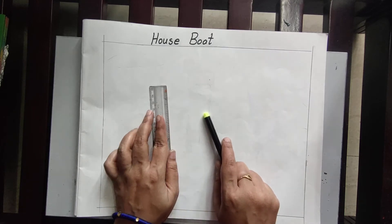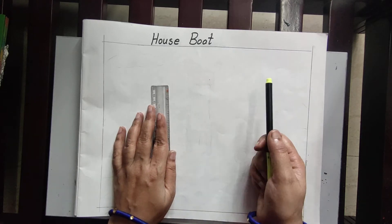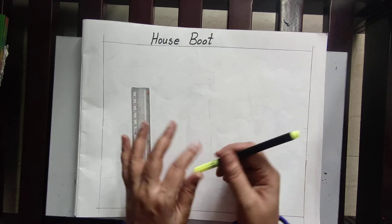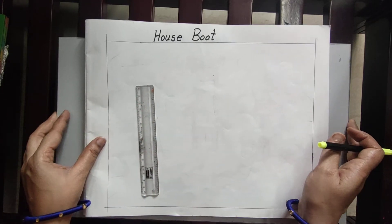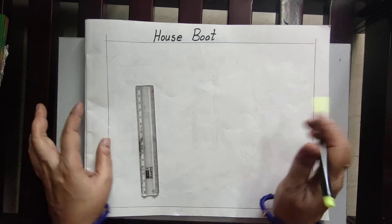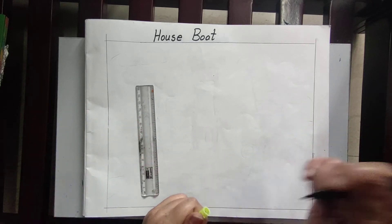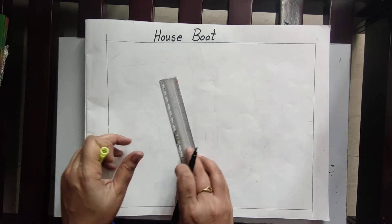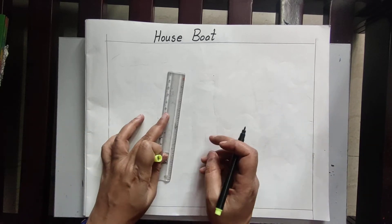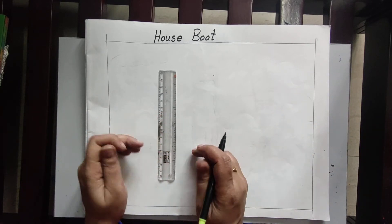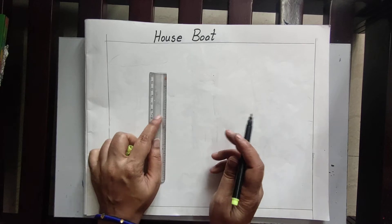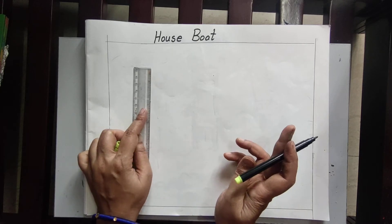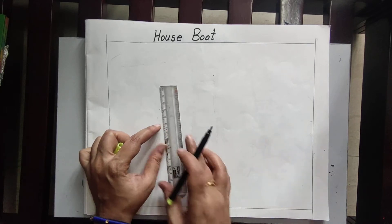Some boats are designed like a house. Where you can see a boat? On the water, on the river you can see a boat. For that purpose you need a scale and pencil. Here I am drawing with sketch pen but you draw with the pencil only.